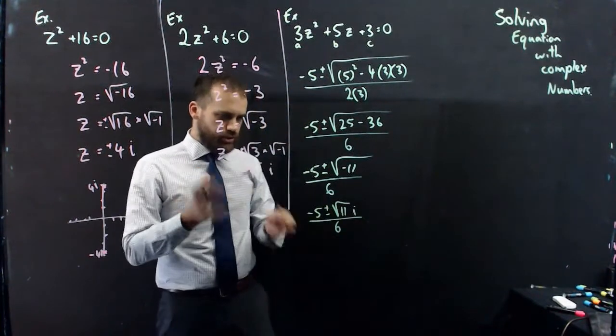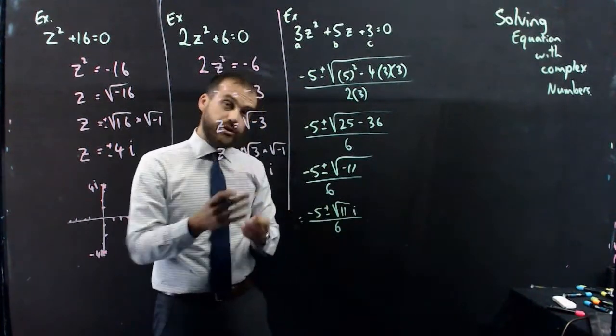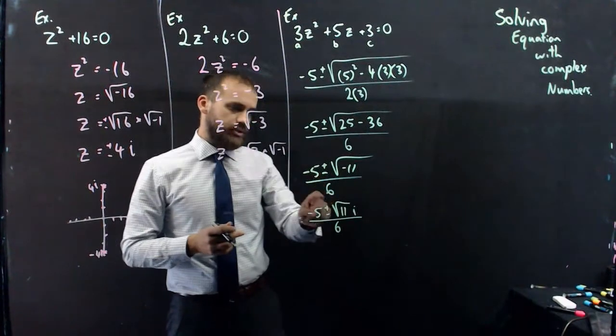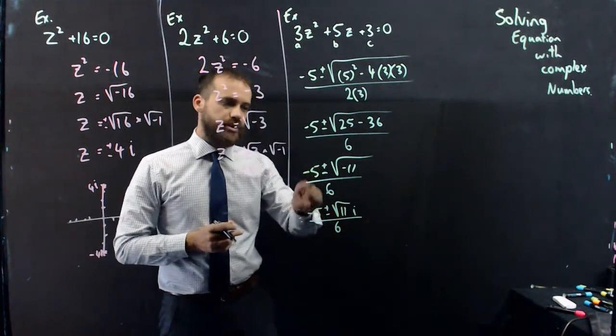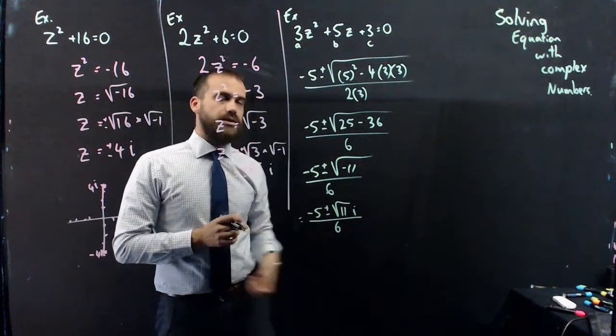Okay, we can stop there. We've got two solutions here. Negative 5 plus root 11i over 6. And negative 5 minus root 11i over 6.